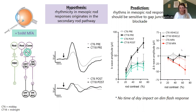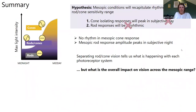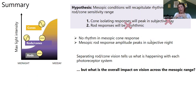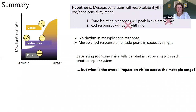To summarise what I've told you so far: unlike data looking at the extremes of visual sensitivities, when we look at this region where rod and cone vision overlaps, we don't see any rhythm in the cone visual response, but rod response amplitude shows quite a clear nighttime peak. Separating rod and cone visual responses in this way tells us what's happening with each photoreceptor system. But what it doesn't tell us is what the overall impact is on vision across this mesopic range, as would normally occur when both photoreceptors are active.